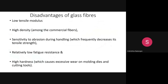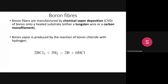We discussed the advantages and disadvantages of glass fibers. Now we'll move to the next fiber, which is called the boron fiber. It is another high performance fiber with a very different manufacturing route compared to glass or aramid fibers. These fibers are manufactured by chemical vapor deposition.